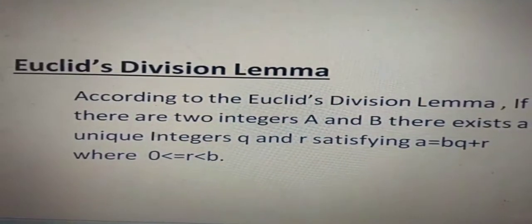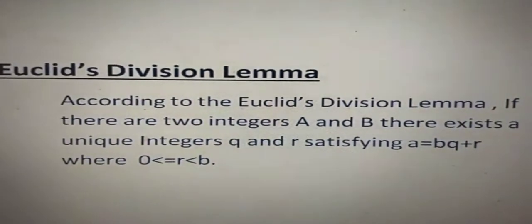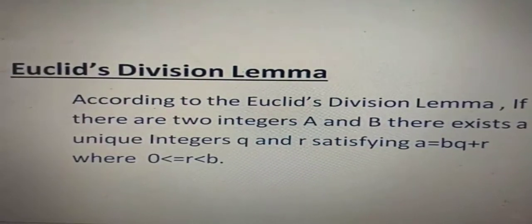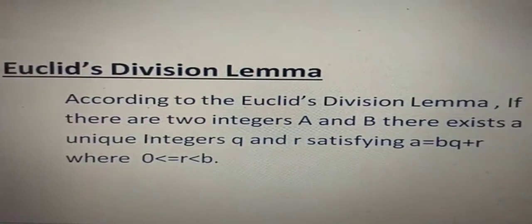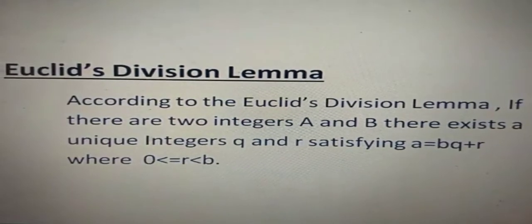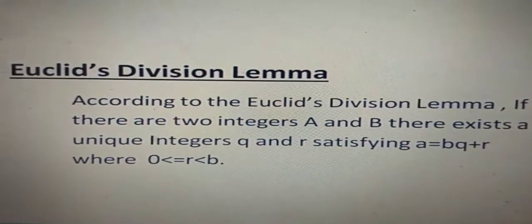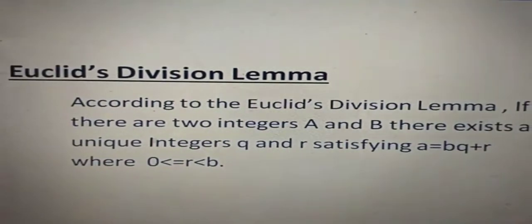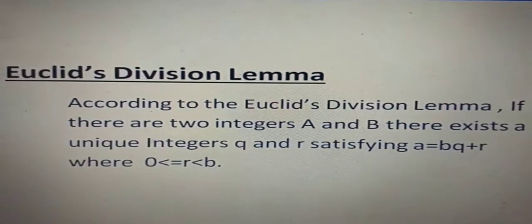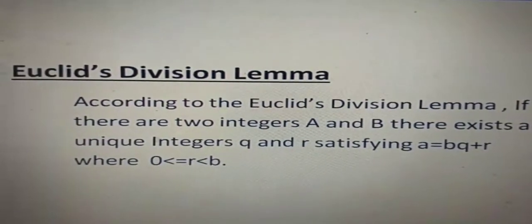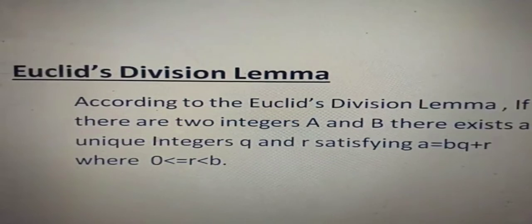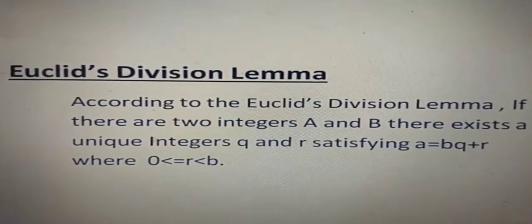Now we will start with Euclid's Division Lemma. It is nothing but another method to find HCF. In the previous class we learned to find HCF by using long division method or prime factorization method, but in this stage we will learn how to find HCF by Euclid's Division Lemma. If there are two integers a and b, there exist unique integers q and r satisfying a equals bq plus r, where r is greater than or equal to 0 but less than b.